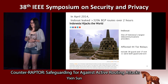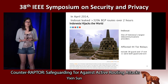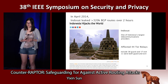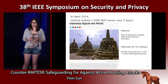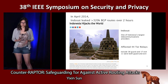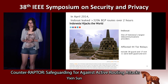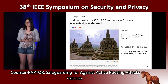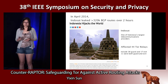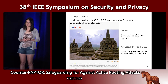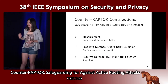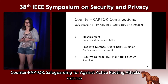These types of BGP attacks are real and have already affected the Tor network in the past. A news article from April 2014 reported that Indosat, one of Indonesia's largest telecommunication providers, leaked more than 320,000 BGP routes over two hours. Among the victims were 44 Tor relays, 38 of which were guard relays with direct connections to Tor clients. These kinds of active attacks motivated our work on Counter-Raptor.